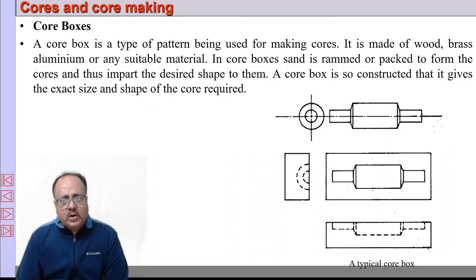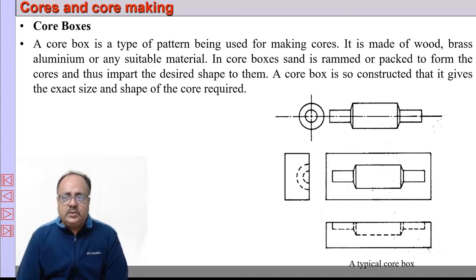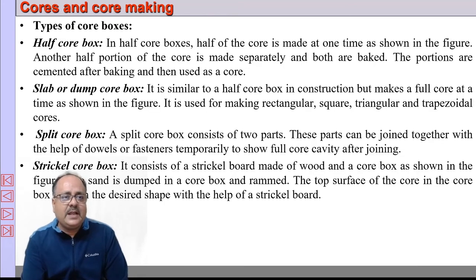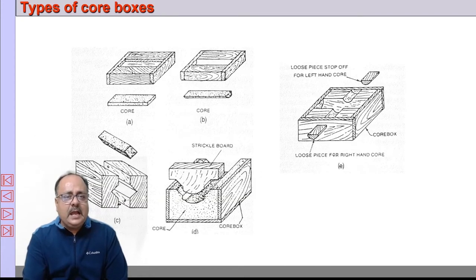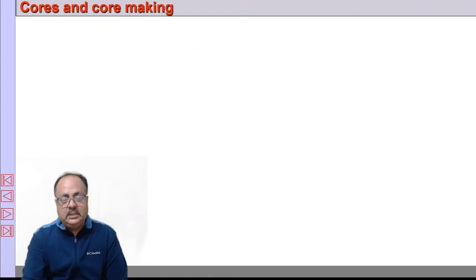Cores are normally made in boxes called core boxes, which are normally made of wood. There are different types of core boxes: half core boxes, slab or dump core boxes, split core boxes, and trickle core boxes. These are the various types of core boxes in which we make the cores.